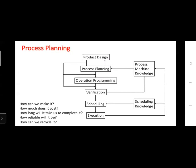The flowchart of process planning includes: product design, process planning, operation programming, verification, scheduling, execution, and process/machine knowledge and schedule knowledge. These are the different points which come under process planning.